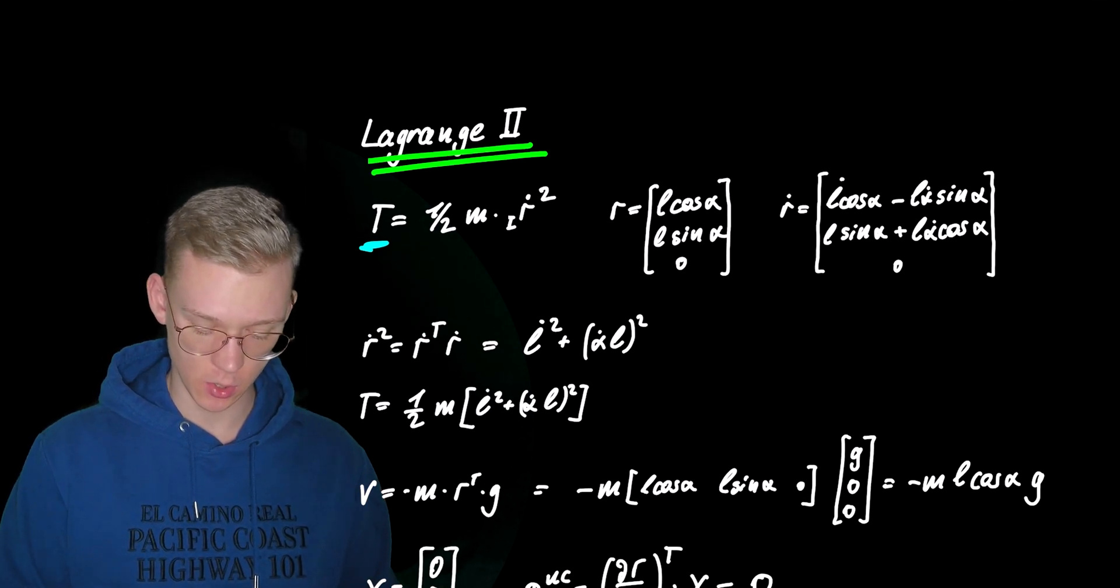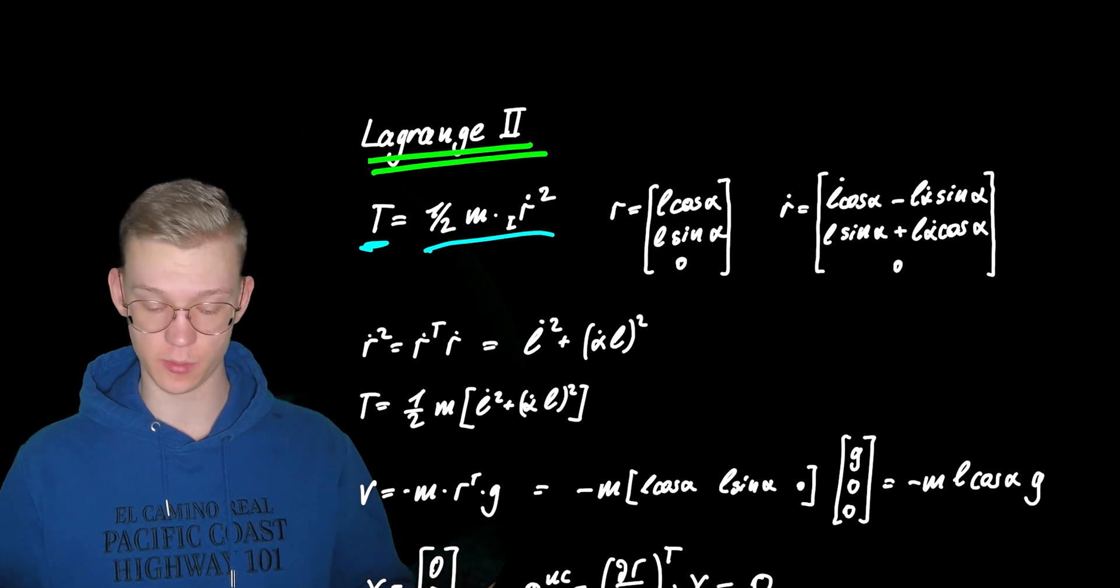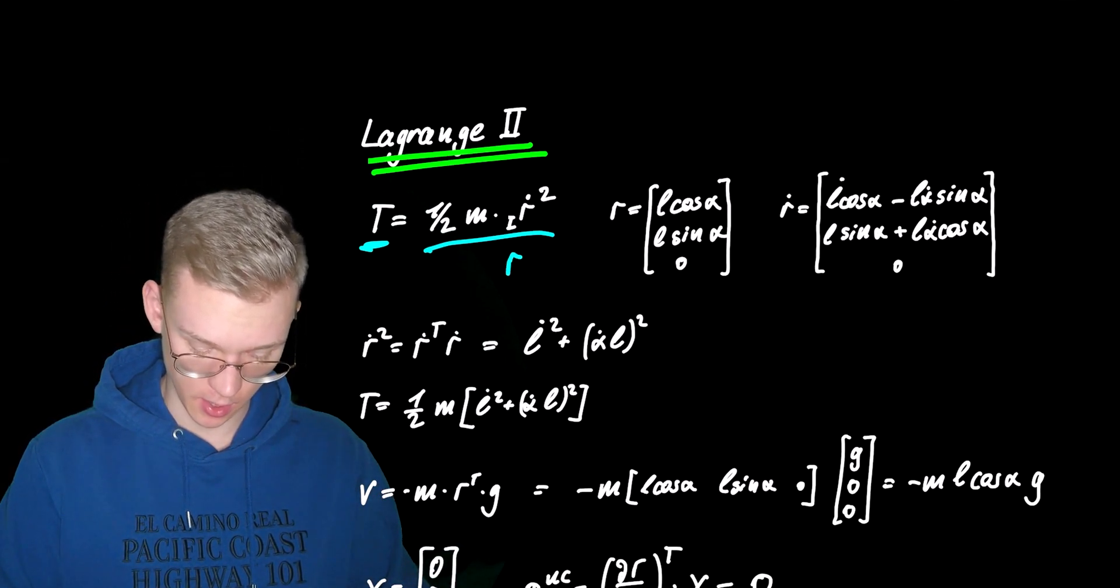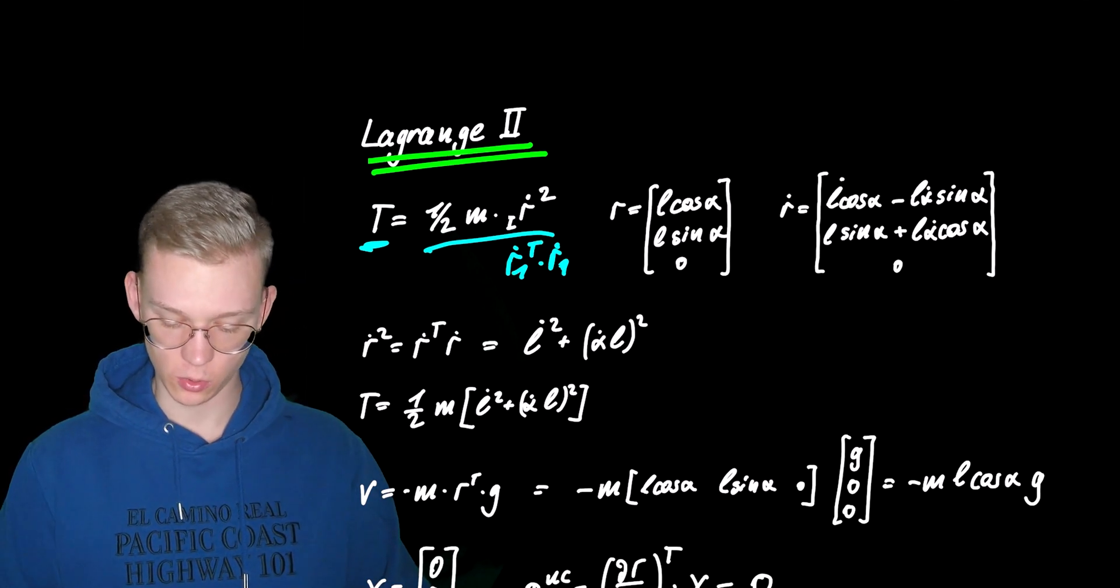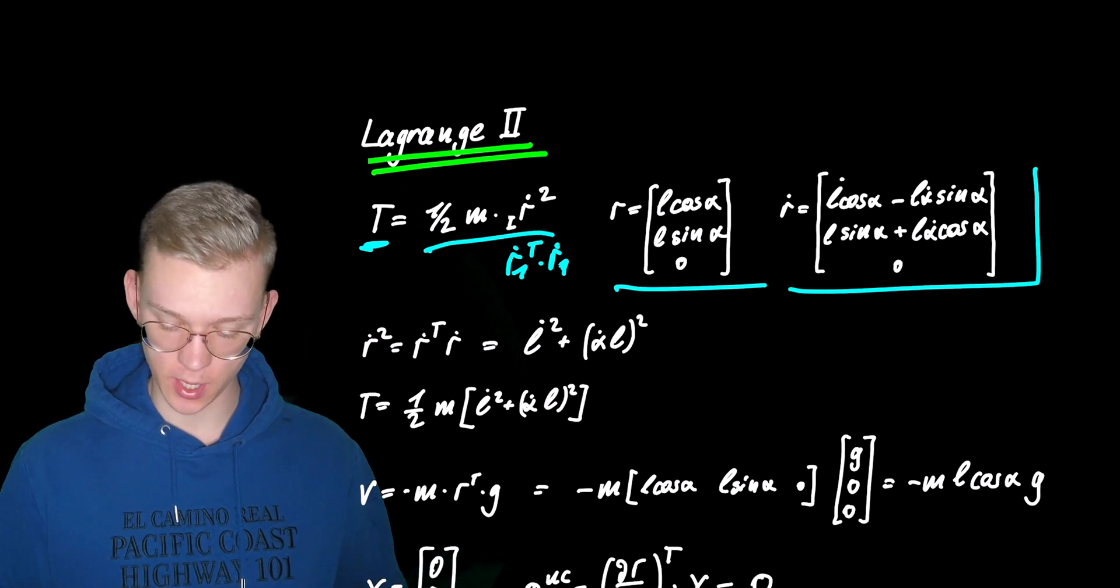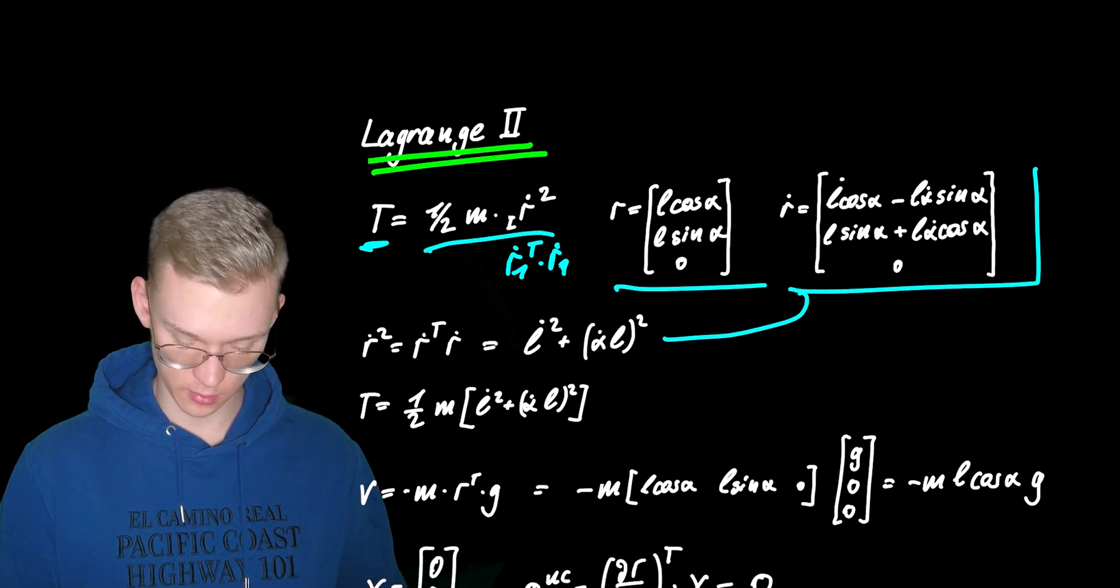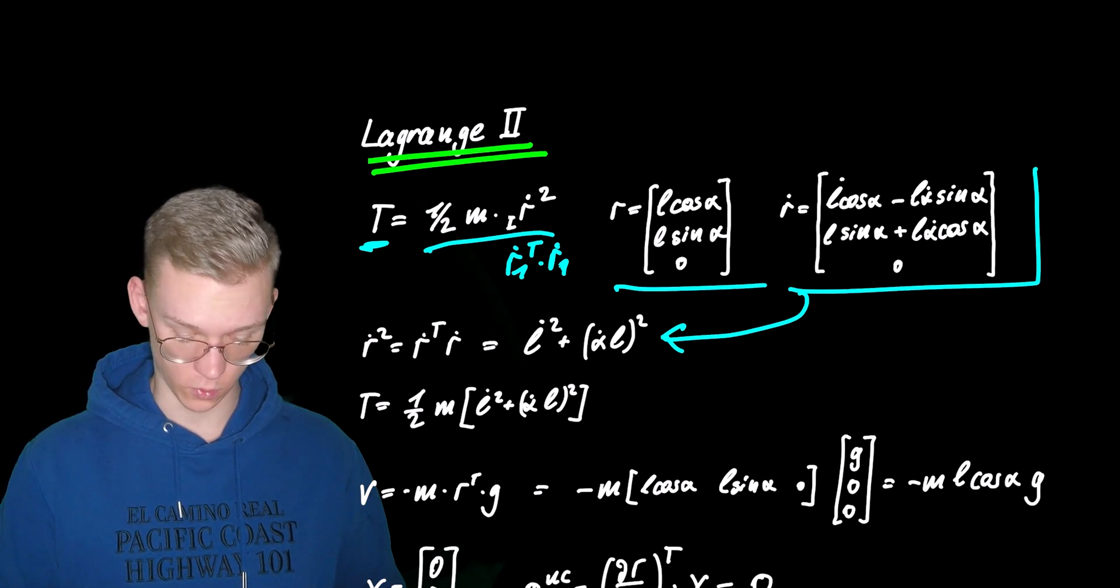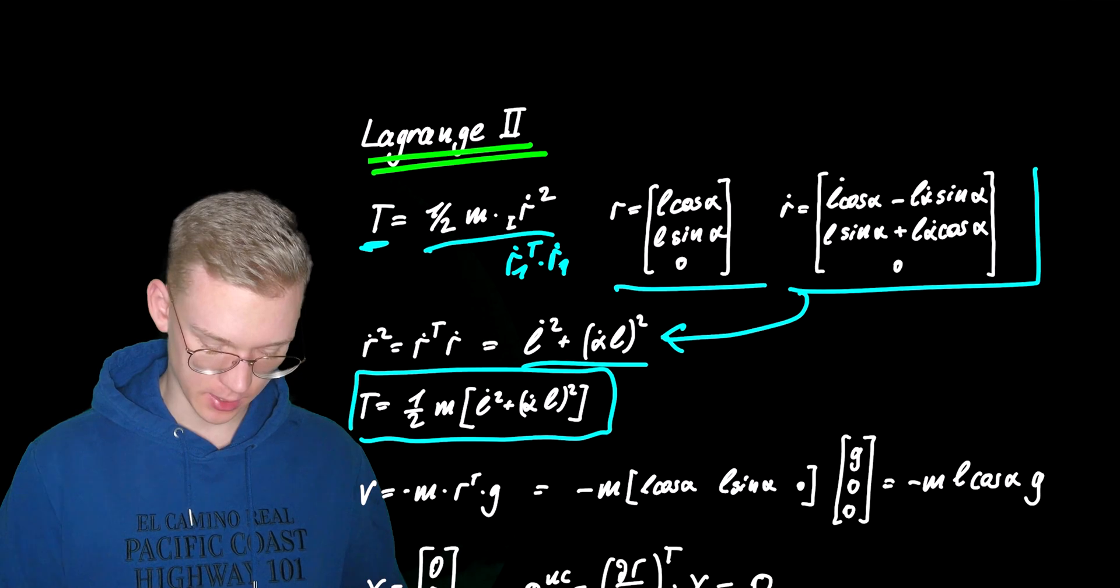The kinetic energy is one half times the mass times v, so velocity to the power of two. We have r1 squared, it's the same as r1 transpose times r1 dot. So we get again the position of our mass and do a simple time derivation. Then we do r1 dot transposed r1 and we go to this expression and that's how we get the kinetic energy.